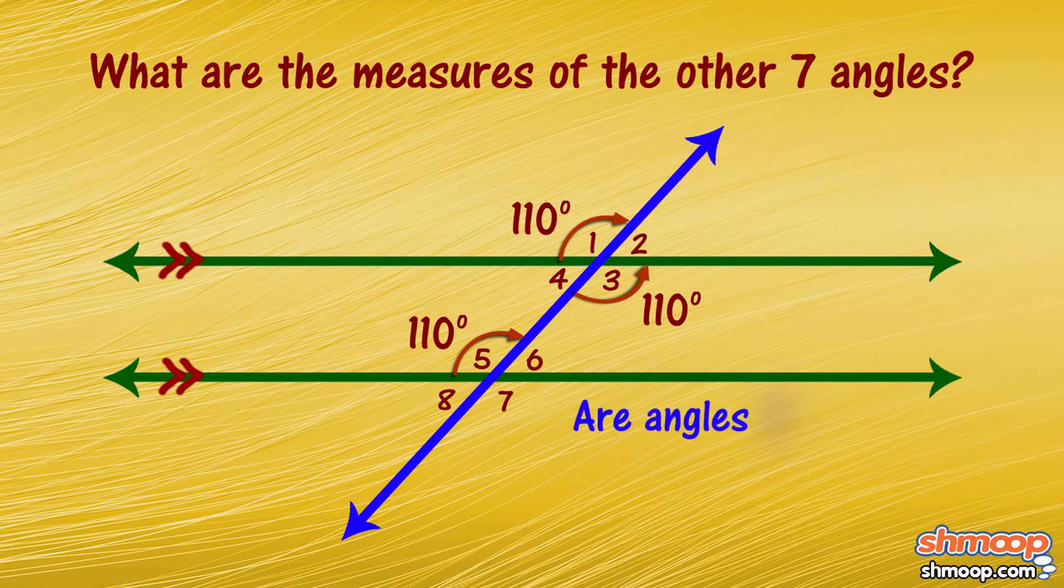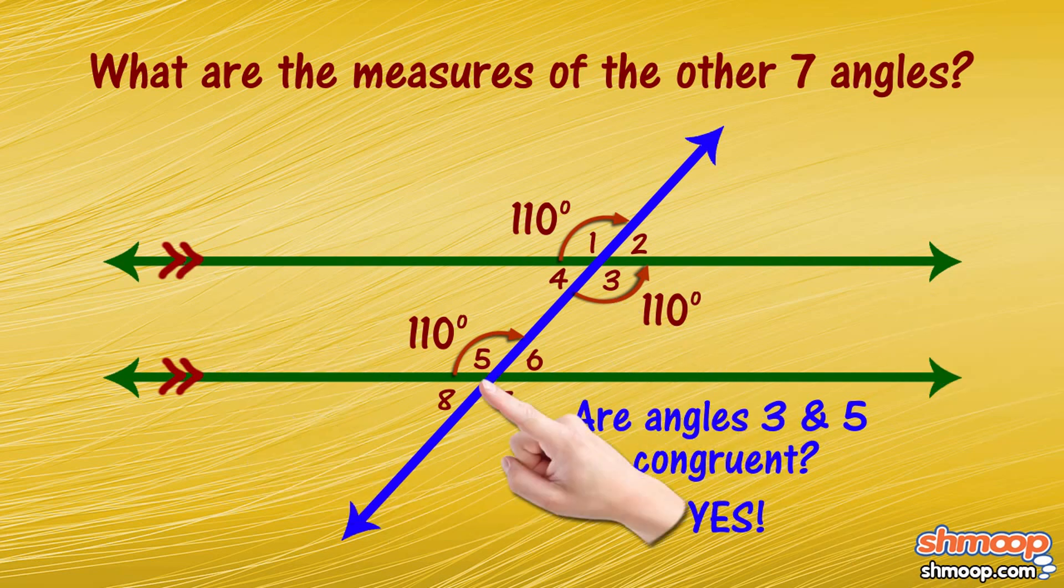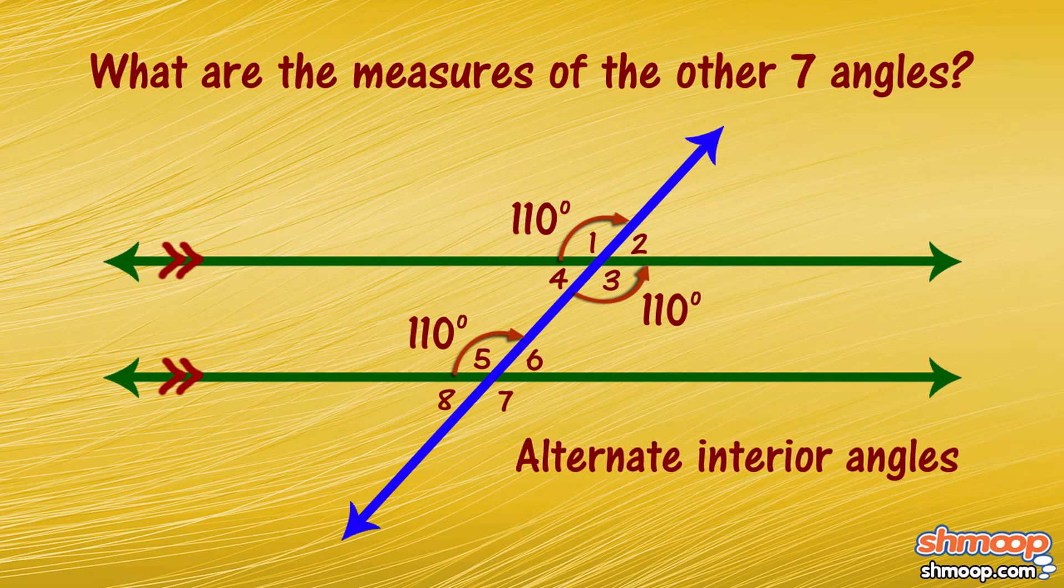Wait. So angles three and five are congruent, too? Actually, yes. They're both on the interior, between the two parallel lines and on alternate sides of the transversal. So we call them alternate interior angles. All alternate interior angles are congruent.